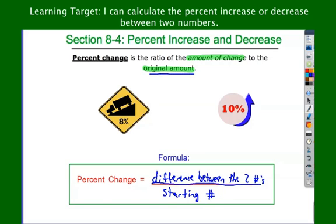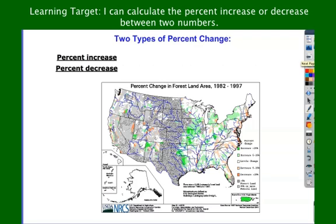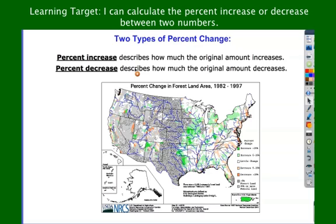A couple of definitions to write down here. Two types of percent change: you can either do a percent increase, which is how much did the original amount increase, or a percent decrease, how much did it decrease.